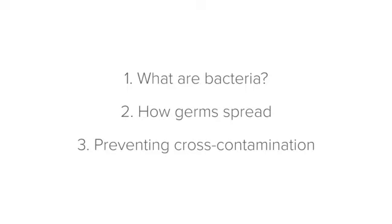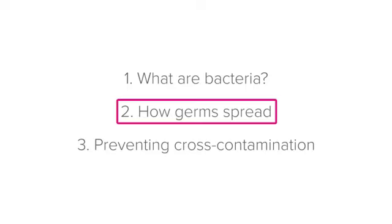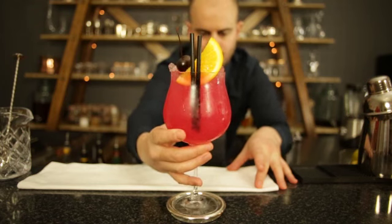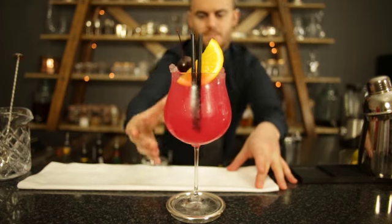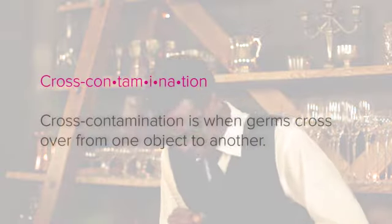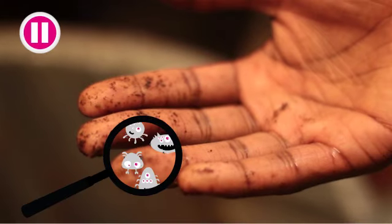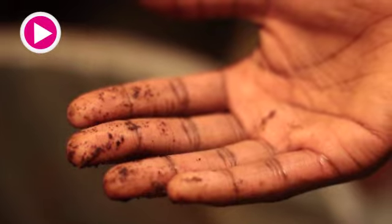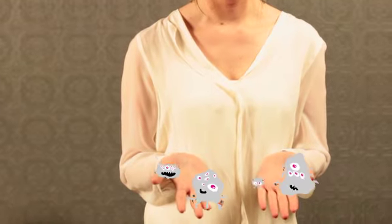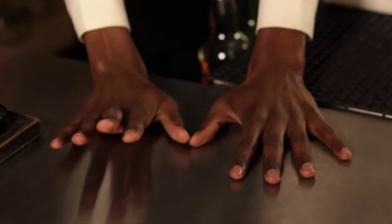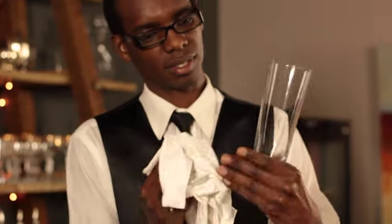Now let's take a look at how germs spread. Something becomes contaminated through what is called cross-contamination. Cross-contamination is when germs cross over from one object to another. One of the most common ways this happens is when a contaminated object — something with pathogens on it — comes into contact with something that is clean. Just think of when you're sick and you sneeze into your hands. Suddenly there are thousands of germs on your hands. If you don't wash your hands properly, the very next thing that you touch will also be covered in those germs.